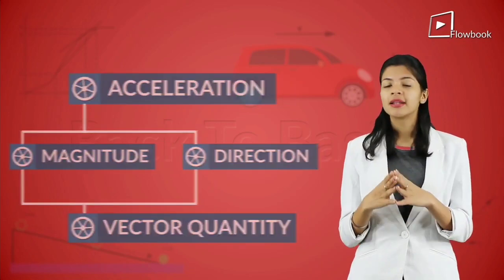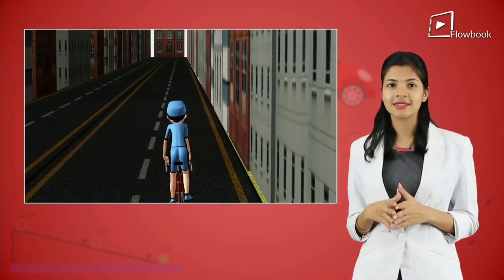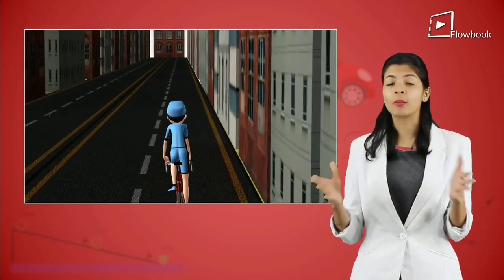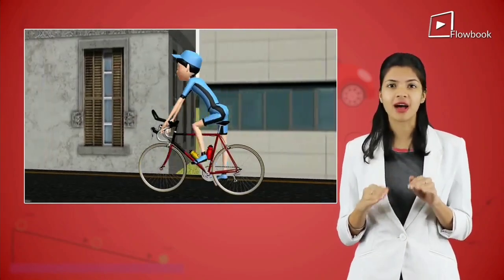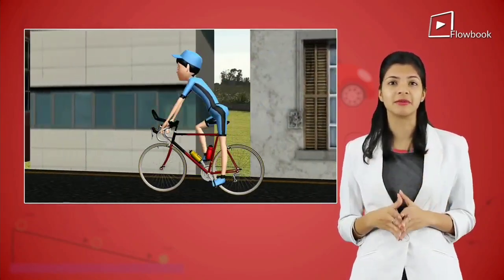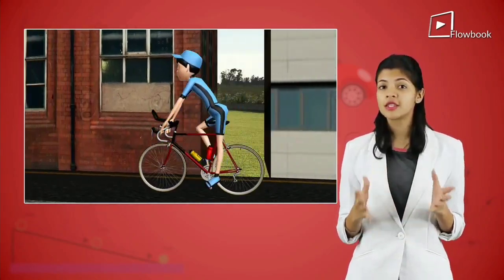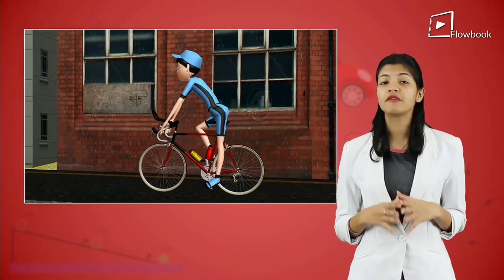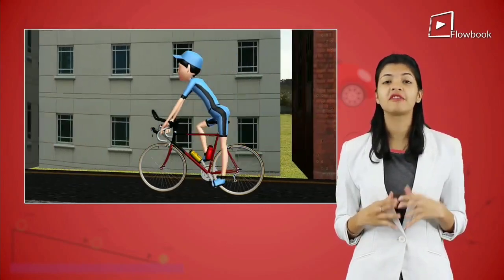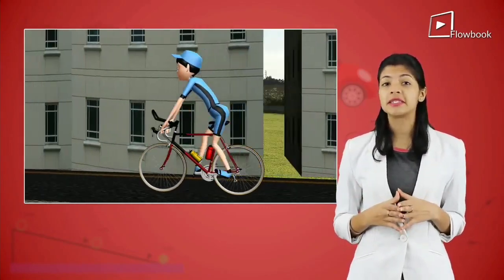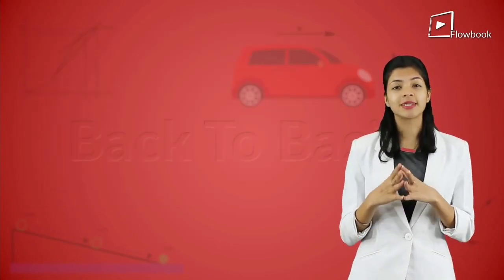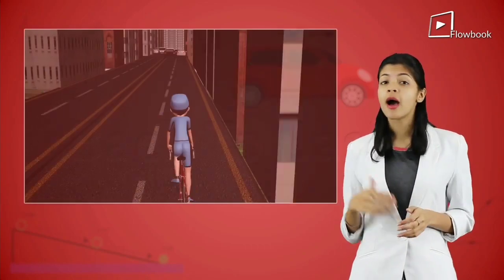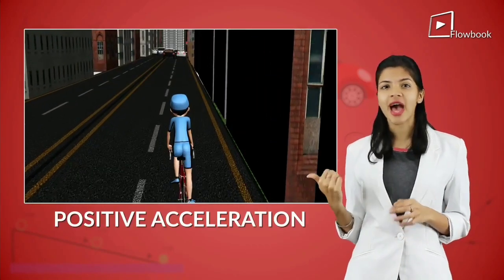Now, let's say the cyclist saw an open space. He starts paddling fast and increases his speed. So if the velocity of a body is increasing with respect to time, it is said to have positive acceleration.